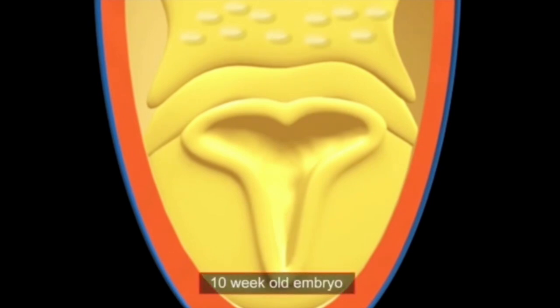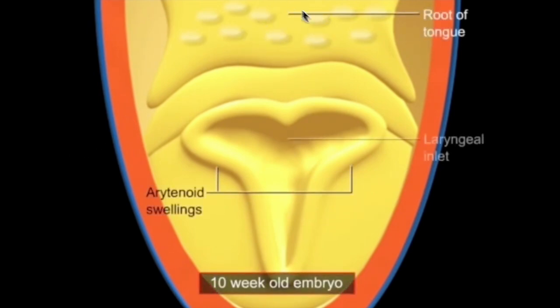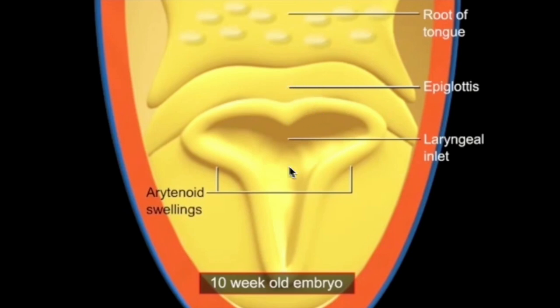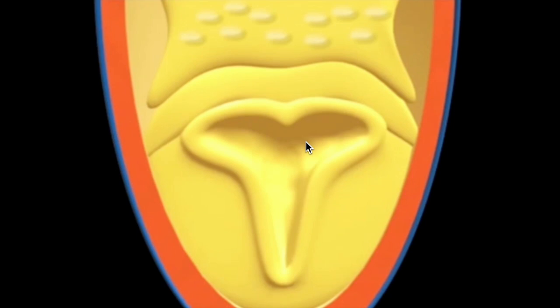By week 10, we can see the root or posterior one-third of the tongue, which was formed by the hypopharyngeal eminence — the same structure that forms the epiglottis. Dorsal to the epiglottis, we see the laryngeal inlet, which opens ventrally into the laryngotracheal diverticulum.